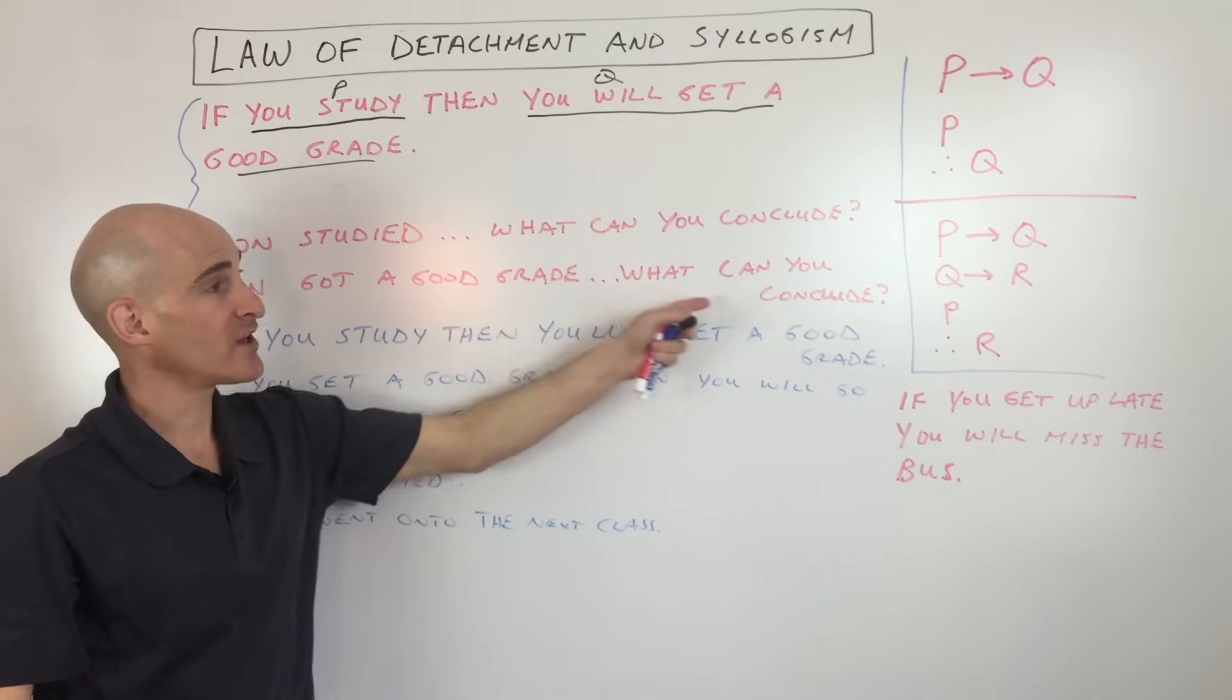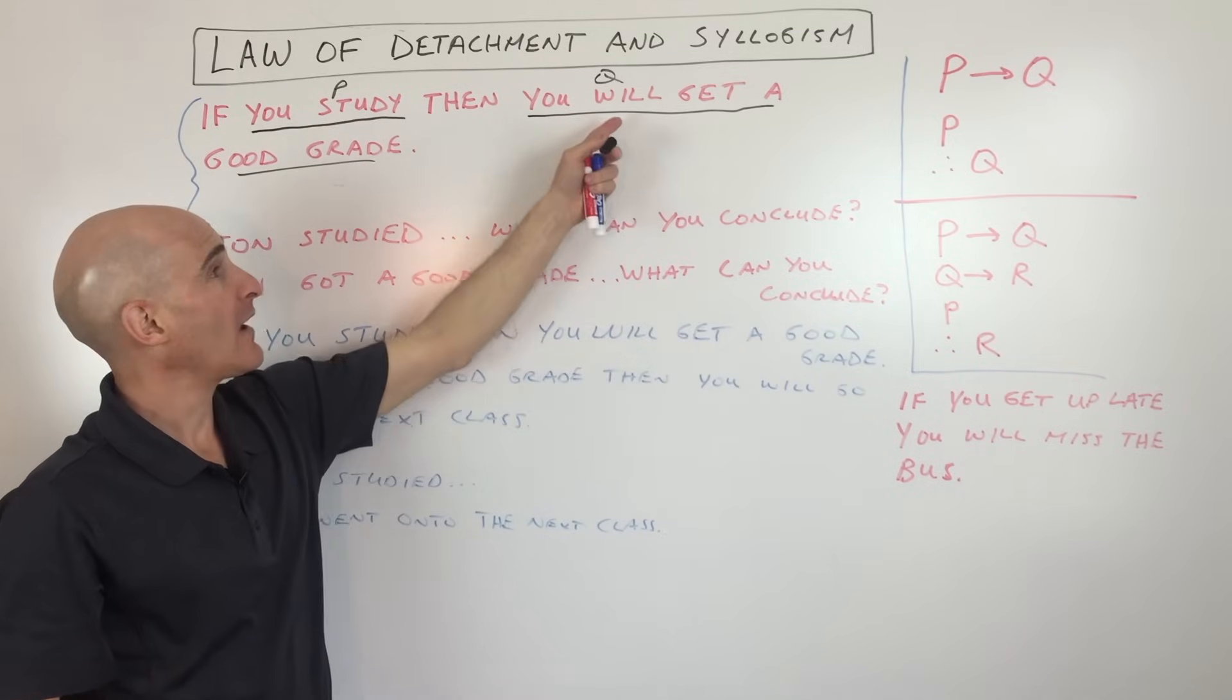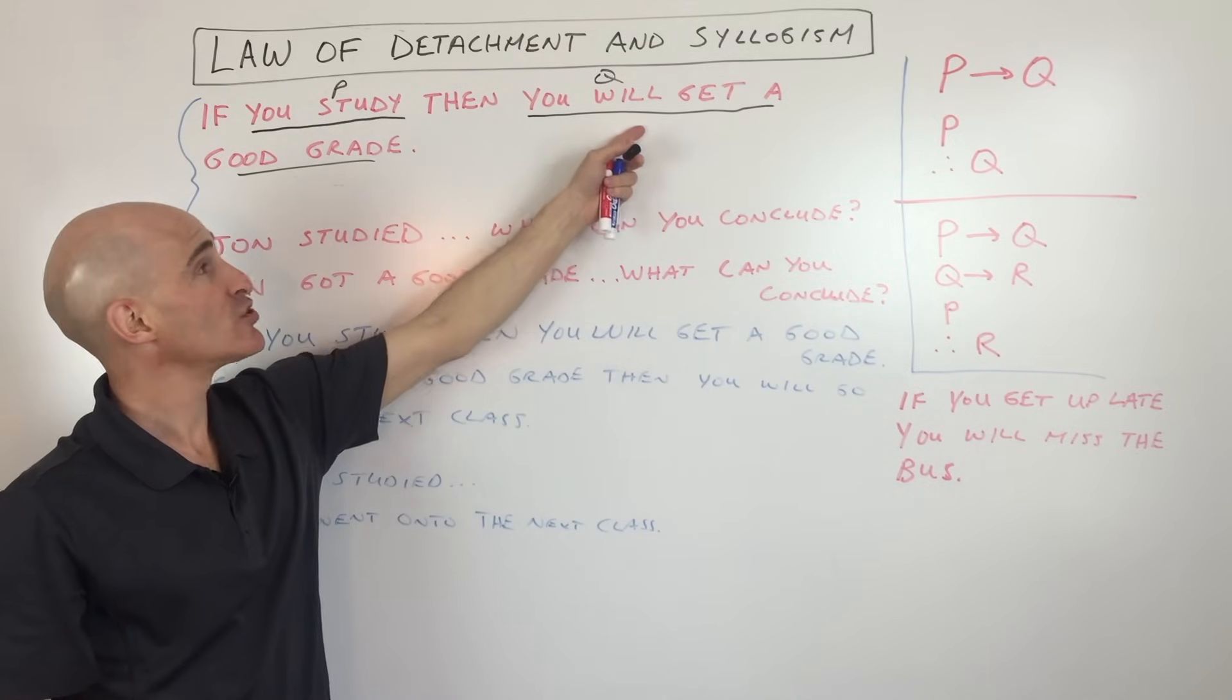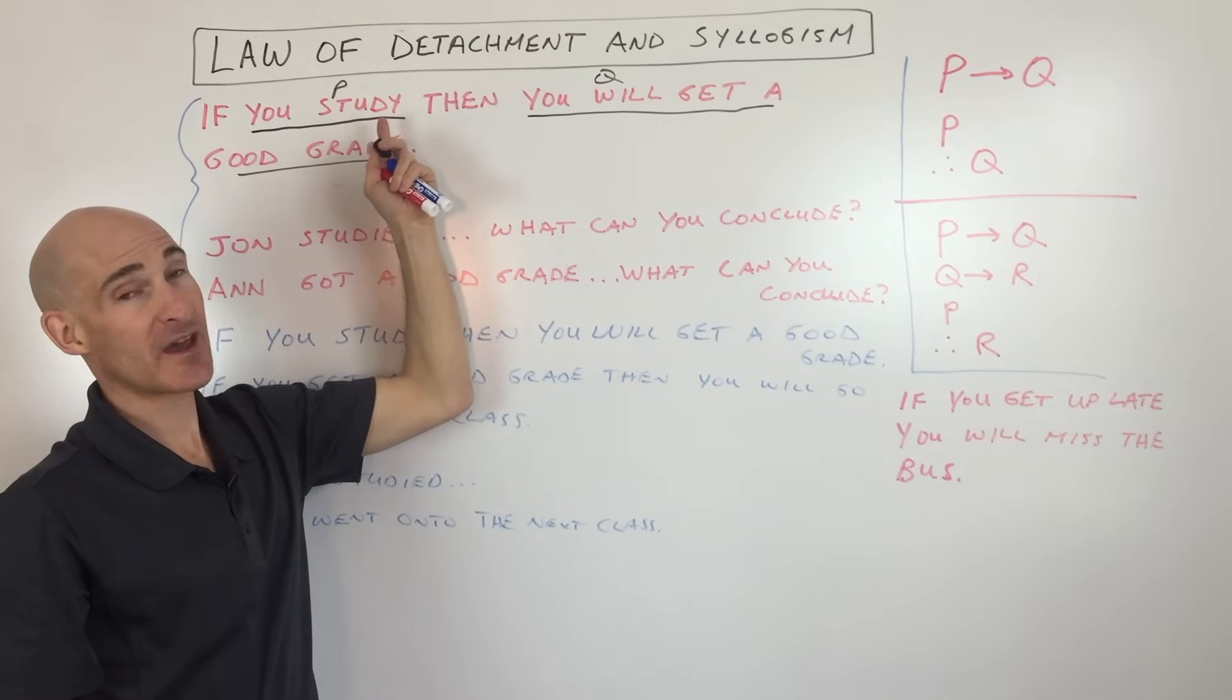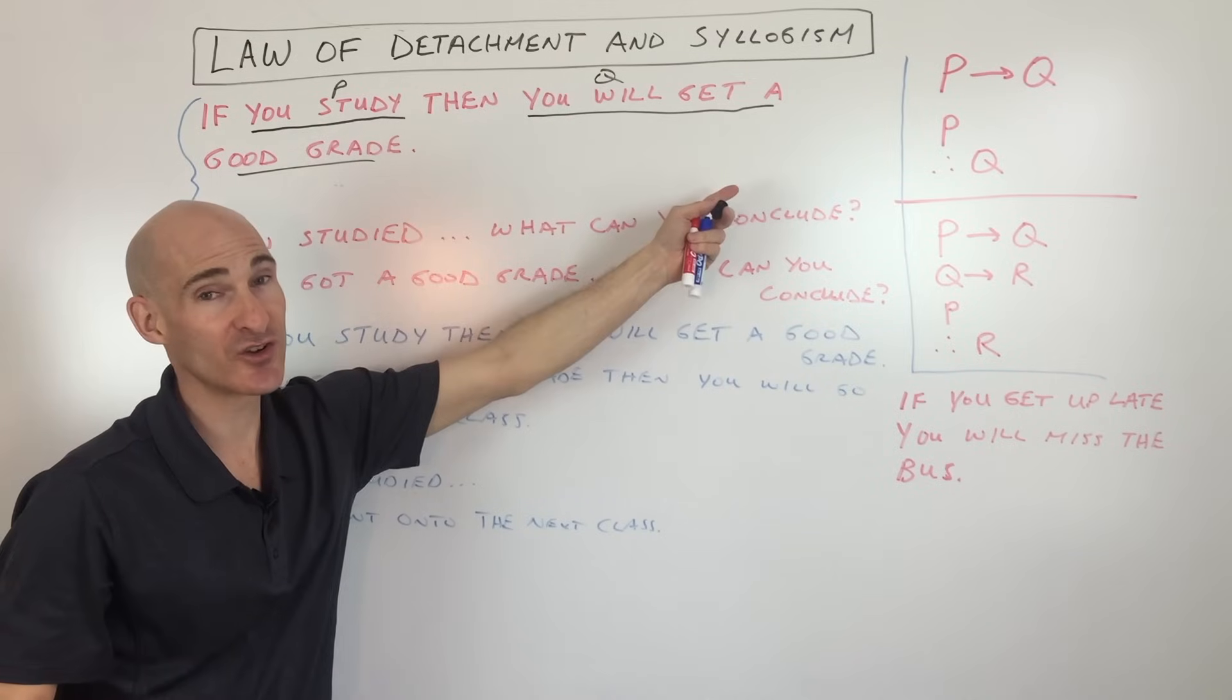Ann got a good grade. What can you conclude? Well, Ann got a good grade. That's actually the conclusion, but we don't know that the fact that she studied. We don't know if that actually is what was the cause of her getting the good grade.